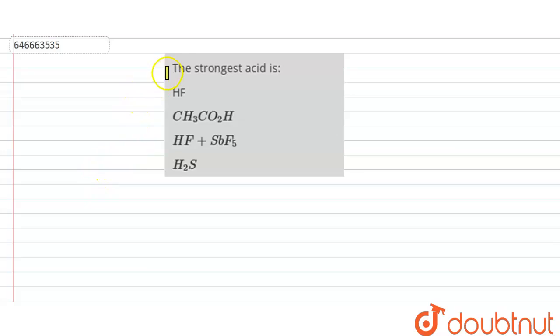The question says: the strongest acid is? First, we have hydrogen fluoride, that is HF. Then we have acetic acid, CH3COOH. Then we have this combination of HF plus SbF5, and then we have H2S.